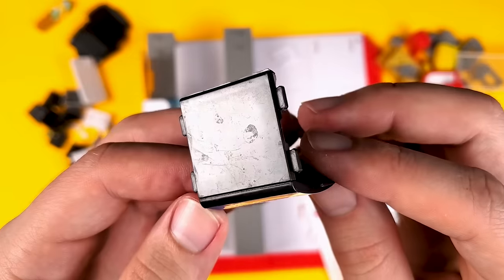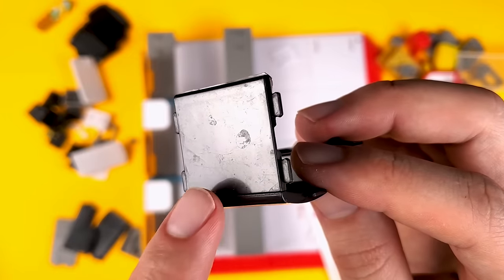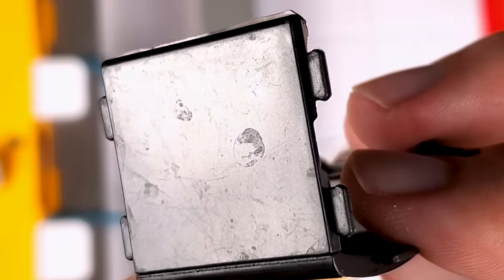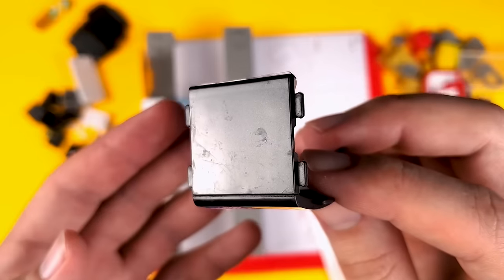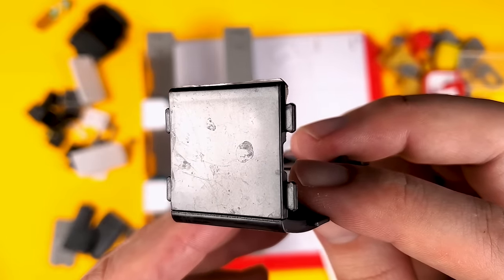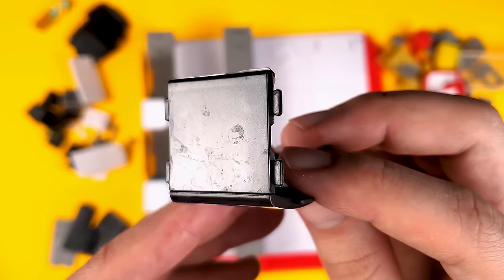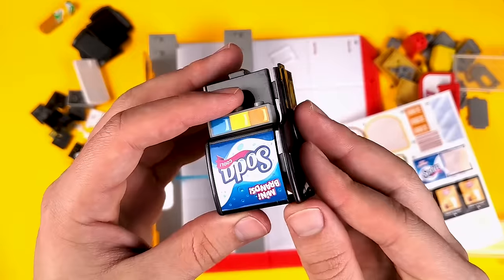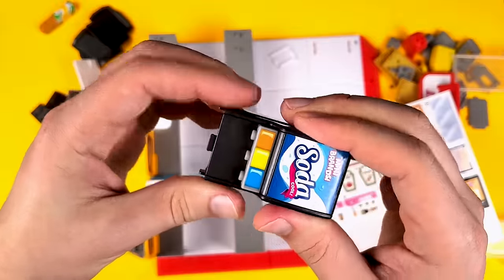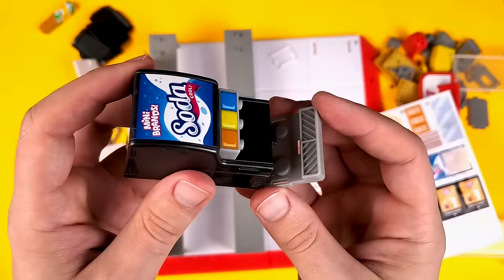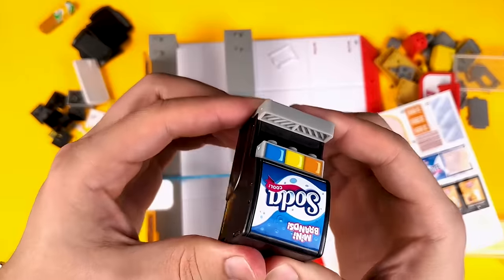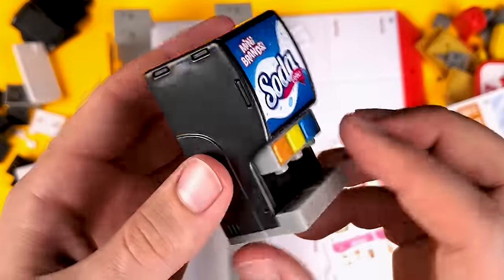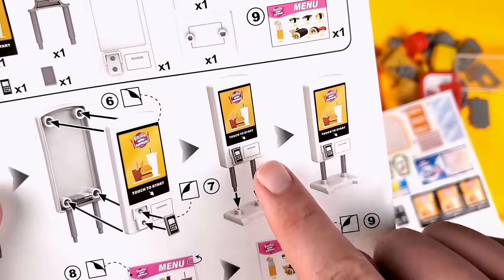Now I think this is a little bit strange - see how dirty these are and scratched? Like what's the deal with that, Mini Brands? It almost looks as if it was used and then broken up again into pieces and put into the set. I don't know, is it just me? All right, there's our fountain drink. I gotta say it looks pretty cool, I'm impressed. Next up is this self-checkout station.